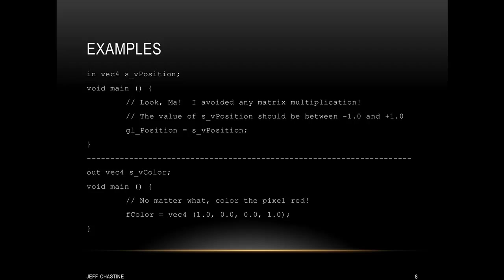We're not going to dive too far into the code today, but I did want to show you an example of what these things look like. In the upper part of the screen, you can see a vertex shader. It has a variable called S underscore V position, and a little bit lower you can see void main, which is the entry point to the vertex shader. There are familiar things like comments, and a lot of the syntax is going to be the same. Down below the line, we have a fragment shader, which also has main as its entry point. In this case, we're saying that no matter what, the final color of this pixel is going to be red, regardless of lighting or any materials applied — it's really not a very good shader.